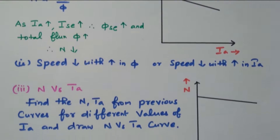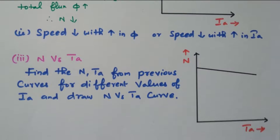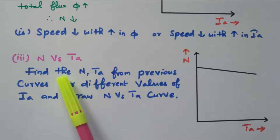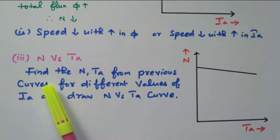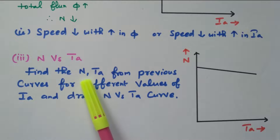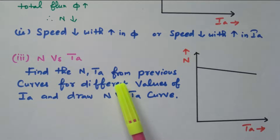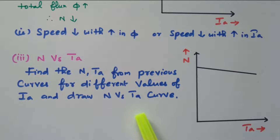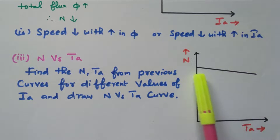Now we will go to the third characteristic: speed versus armature torque, N versus Ta. This is drawn from the previous two curves by finding the speed and armature torque for different values of armature current, then plotting the speed versus armature torque curve. When the armature torque increases, the speed slowly decreases.